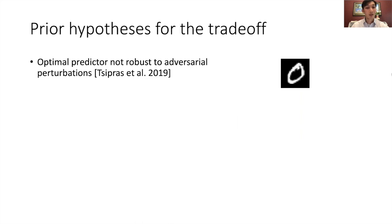So why is there a trade-off between robustness and accuracy? After all, we only augmented with more data. Prior works have given us some hypotheses for this trade-off. One is that the optimal predictor is itself not robust to adversarial perturbations, meaning that the perturbations can change the true target or label.